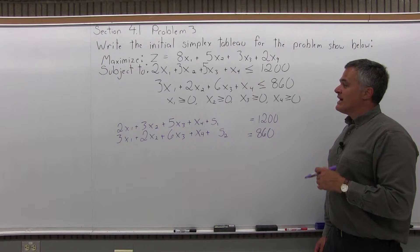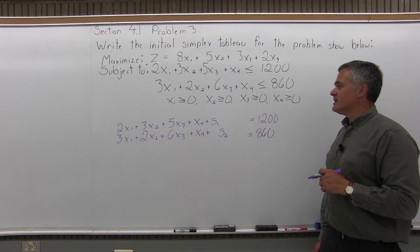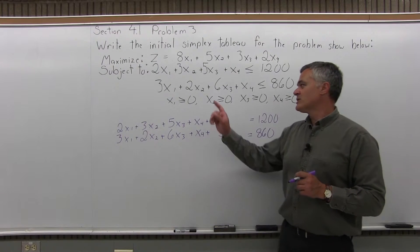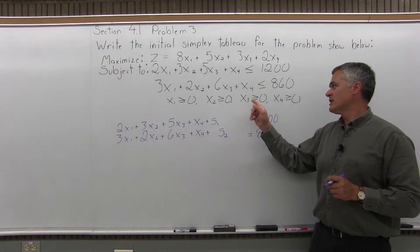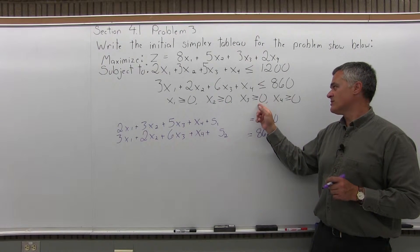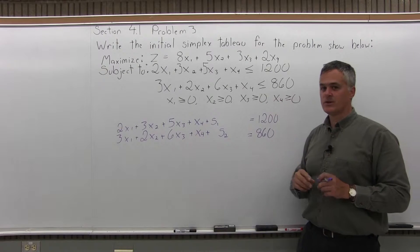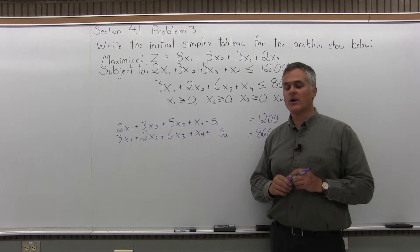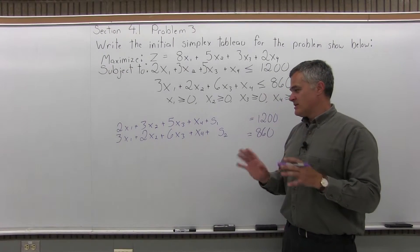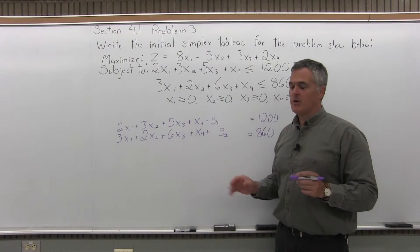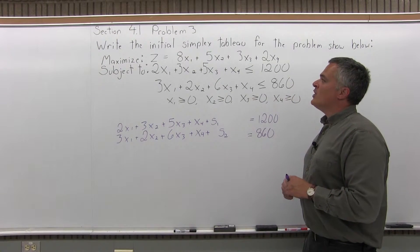The next constraints are all the ones about greater than or equal to 0: x1, x2, x3, and x4 are all greater than or equal to 0. These do not need to go into the matrix, so I can just forget about those at this point.